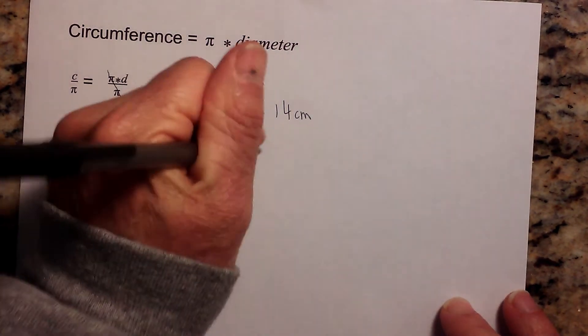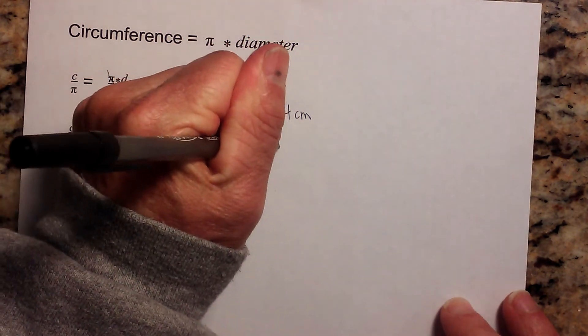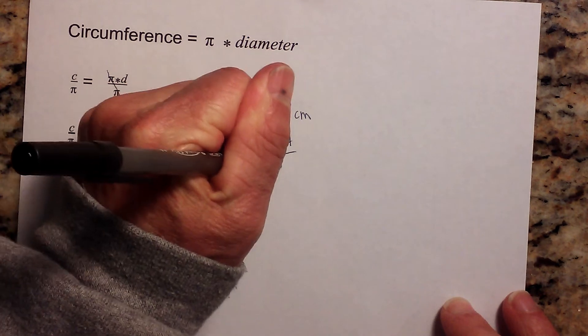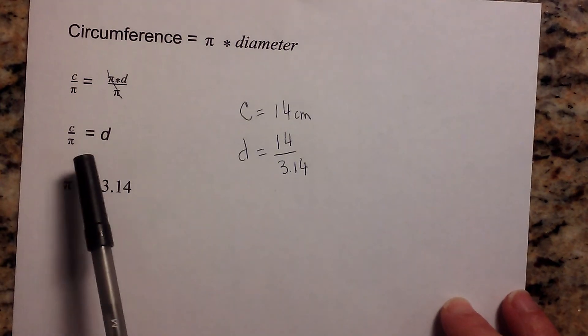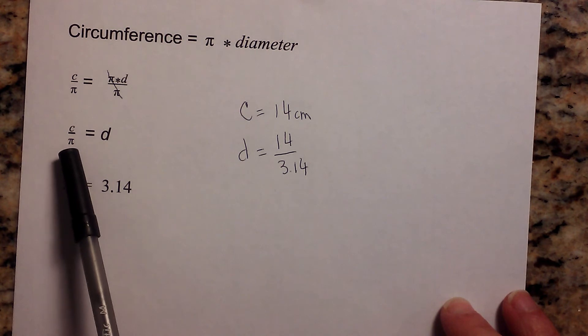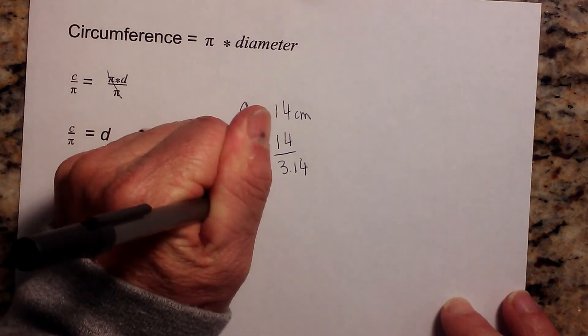Okay, so now I need to find diameter. So diameter is equal to the circumference divided by pi, and remember this is the formula we figured out right here.